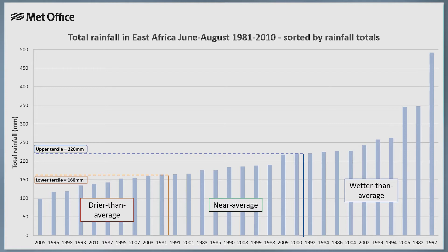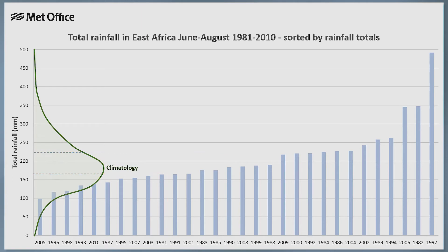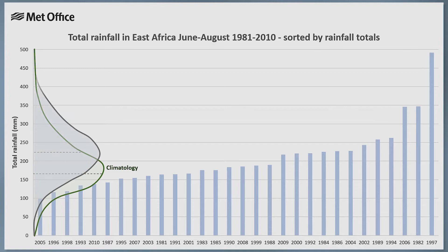When we construct terciles using dynamical model data, we use the same process but with hindcast data, using multiple ensemble members instead of observations. We can also construct a frequency distribution from the data, producing a curve showing the likelihood of a particular amount of rainfall based on past data. The area under the curve for each tercile is one-third, or about 33%, of the total area, and each tercile category has occurred one-third of the years in this period. Now, once we've generated our forecast by running the dynamical model, each ensemble member gives us a different seasonal rainfall total for the next season. Using the ensemble output, we can construct a forecast probability distribution and see how many ensemble members fall into each historical tercile category.